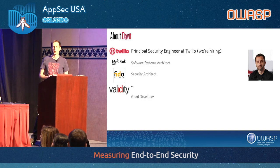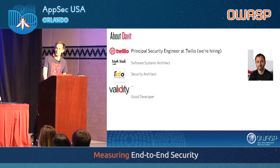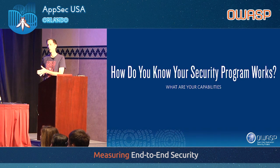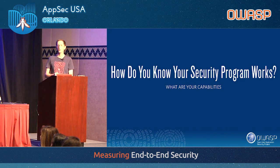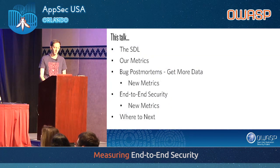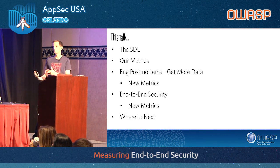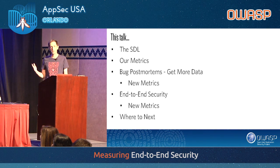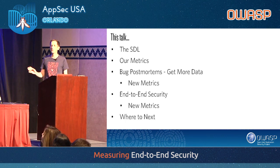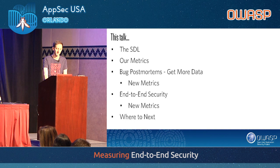David was an architect for both software and security, and he comes from a background where he was a good developer whereas I was the bad developer — so you get both viewpoints in this presentation. The question we wanted to answer was: how do we know our security program is working? In this talk we'll cover Twilio's SDL, our initial metrics, bug postmortems, new metrics from that process, end-to-end security, and where we're going next.